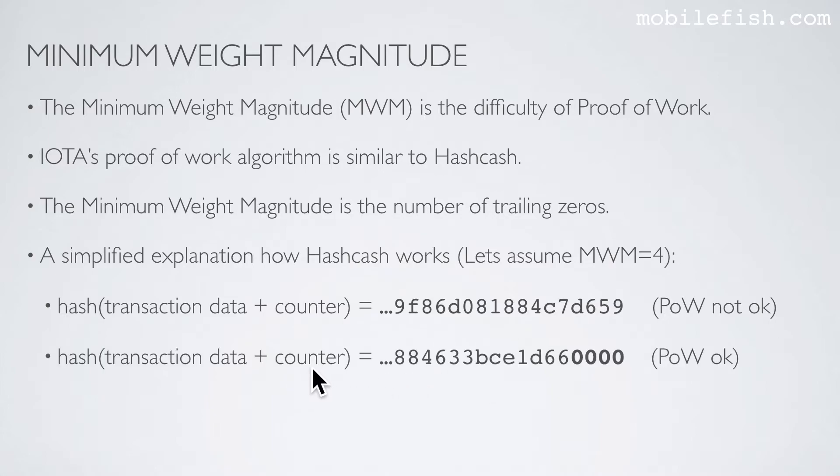At a certain counter value, you will get this hashed value. As you can see, this hashed value has 4 trailing zeros. In this example, the proof-of-work is okay, so your proof-of-work is done. And this is how hashcash works.